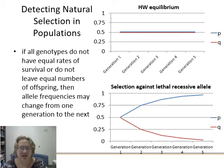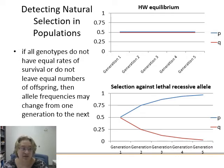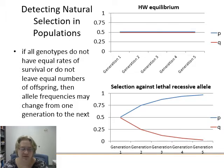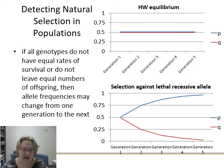How do we detect natural selection in populations? If all genotypes do not have equal rates of survival or do not leave equal numbers of offspring, allele frequencies can change. If genotypes do have equal rates of survival and leave equal numbers of offspring, they're not going to change — if there's no pressure, nothing's going to happen.